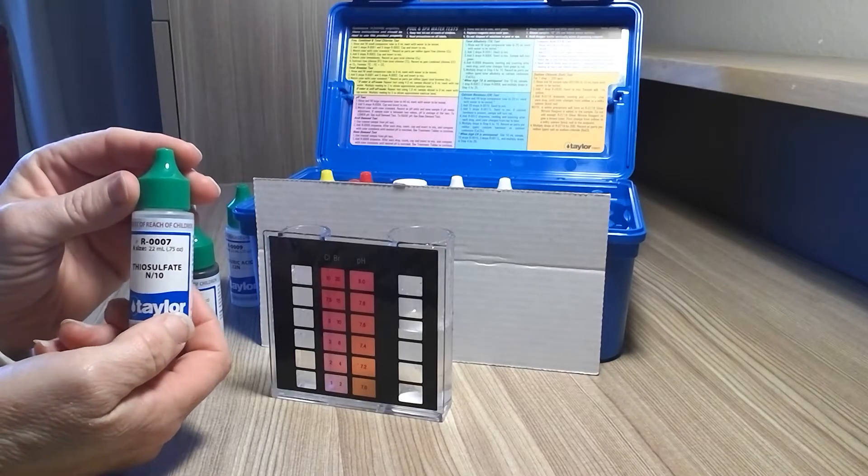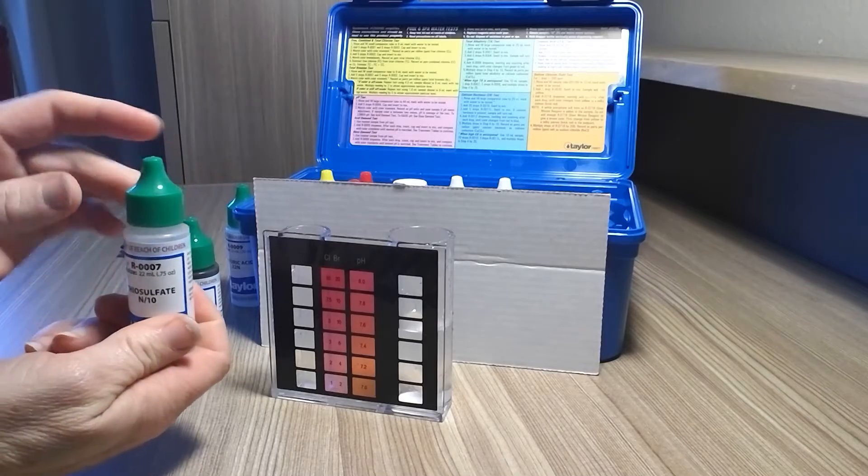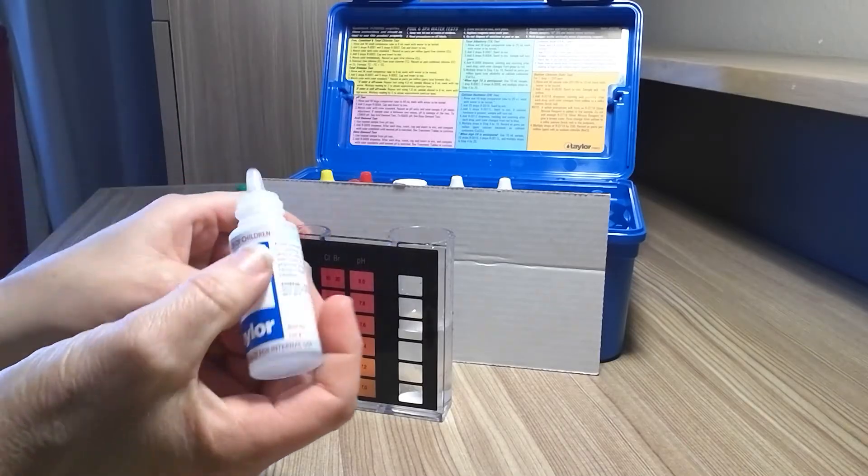First thing that you're supposed to do is use your R0007 and you're going to put two drops in and swirl to mix.